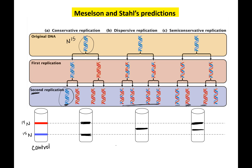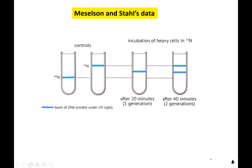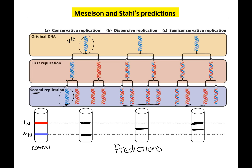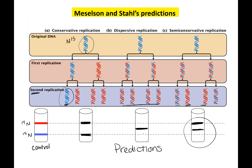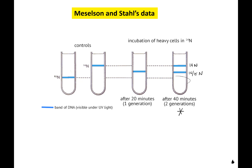Their results showed that after two generations, they had a light band and a medium band. Looking back at the predictions, the only model consistent with a light band and an in-between band is semi-conservative replication. Conservative replication would give a light and a heavy band — there was no heavy band. Dispersive would give only one band, but they saw two.